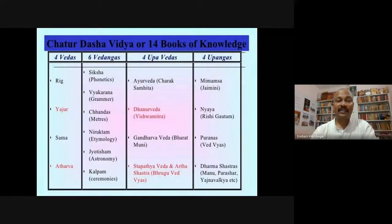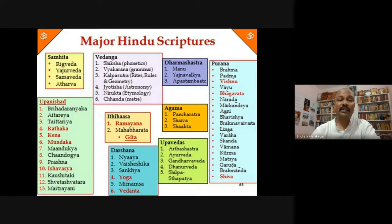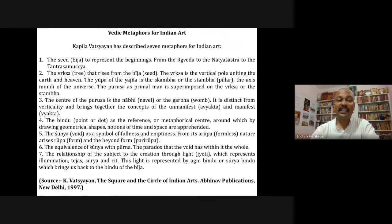In the Chatur Dasha Vidya or 14 groups of knowledge — including four Vedas, six Vedangas, four Upavedas, and four Upangas — we can find references to different arts and architectures. Major scriptures including the Puranas, Darshanashastra, and Agamas are also key sources. As noted by Kapila Vatsyayan, the concept of the seed (bija) represents beginnings from the Rigveda through the Natya Shastra to the Tantrasamucchaya; the bindu or dot serves as a metaphorical center around which geometrical shapes organize notions of time and space.